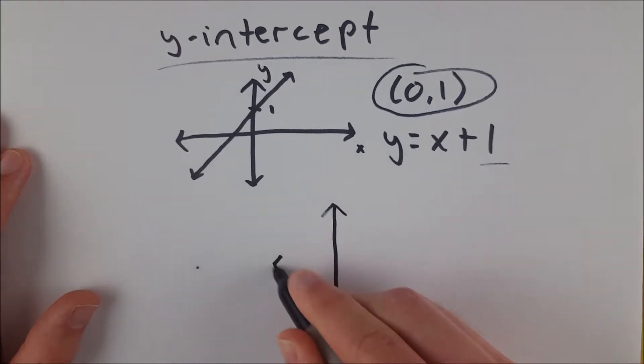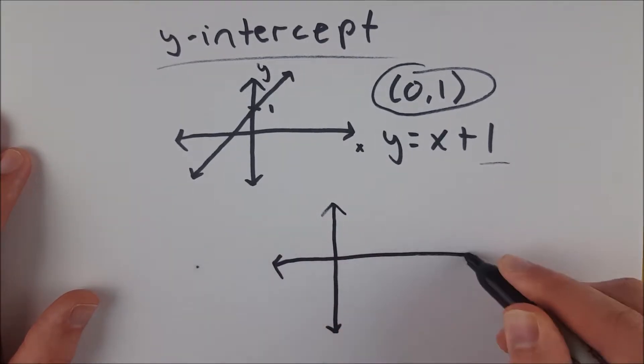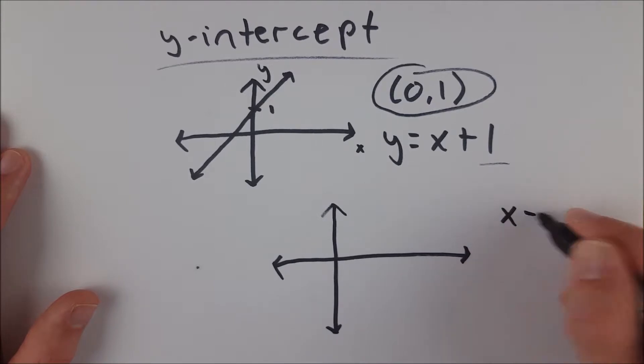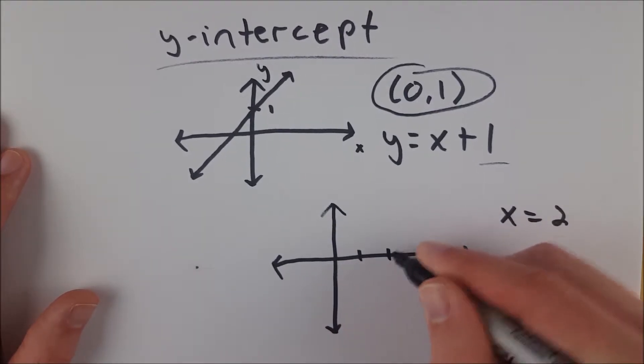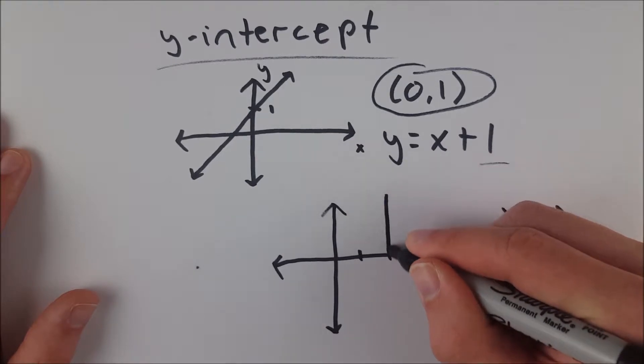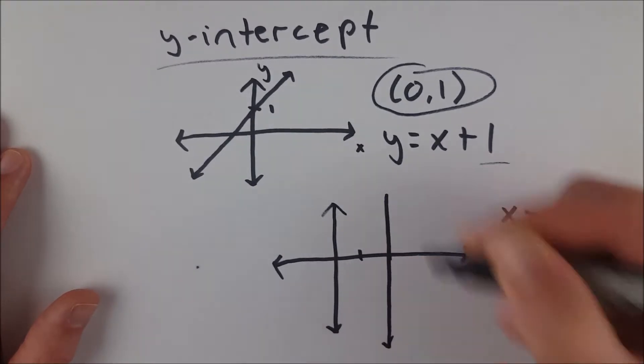So for example, if we draw another coordinate plane and look at the line x equals 2, let's say this is x equals 2 right here. So the line x equals 2 looks like this.